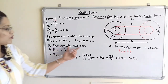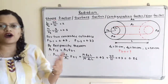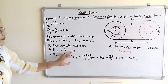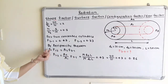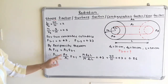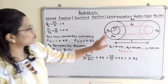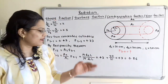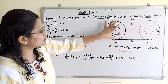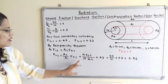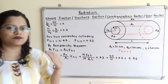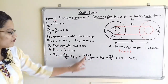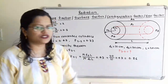We apply the reciprocity theorem to find F(1→2). By the reciprocity theorem, A1 · F(1→2) = A2 · F(2→1), so F(1→2) = (A2/A1) · F(2→1). Here A2 = π·D2·L and A1 = π·D1·L, so π and L cancel, giving F(1→2) = (D2/D1) · F(2→1) = (20/10) · 0.43 = 0.86.